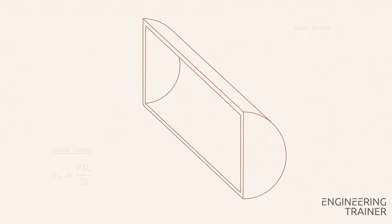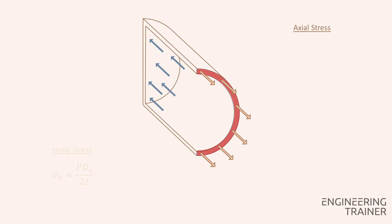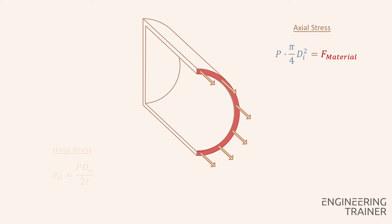Now let's go back to our pipe section with closed ends and take a closer look at the axial stress. The axial pressure thrust causes a material stress in the axial direction. For this system to be in static equilibrium both have to be equal. The left side of our equation — so the pressure force — is formed by the pressure value P times the area A_P inside the pipe. For this inside area we will consider the full circle based on the inner diameter, which is calculated as pi over 4 times the square of the inner diameter. The right side of our equation — so the force inside the material — is equal to the axial stress sigma A times the area A, which is the cross-sectional area of the pipe wall.